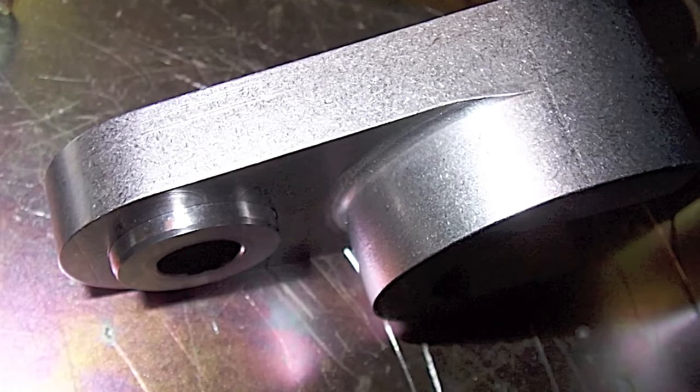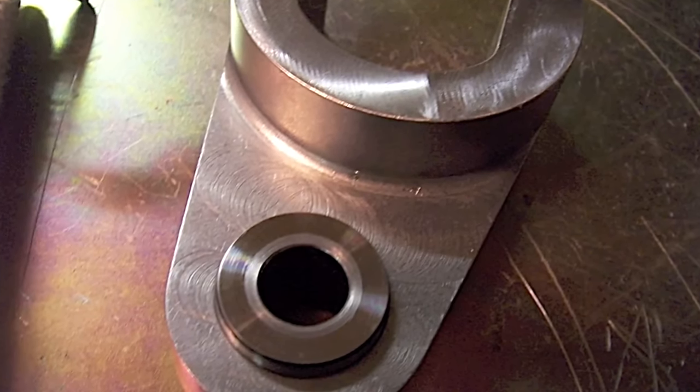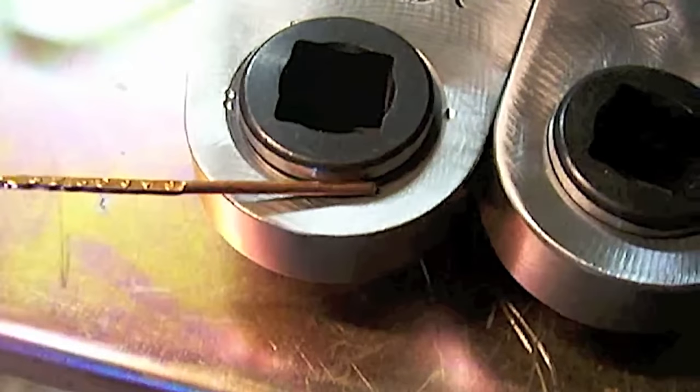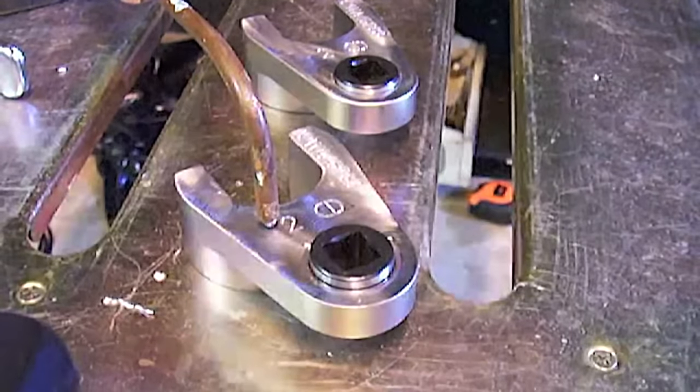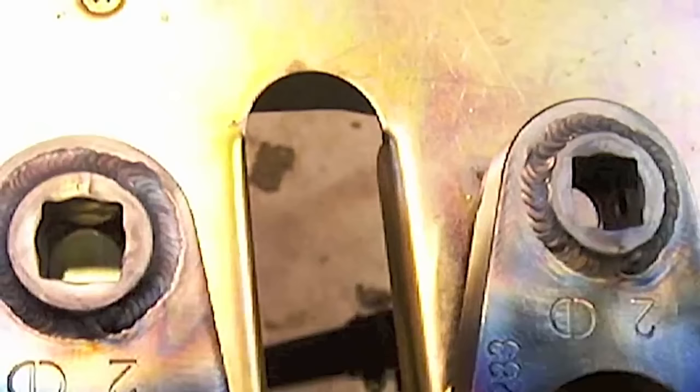One super important thing is communicating with the customer. In this case these parts got a black oxide treatment and I would not have known that had I not have asked. Socket inserts like this are often made out of chrome vanadium steel and typically I'd go with a 309 filler on something like that but knowing that it was going to get black oxide treatment I went with the ER70.